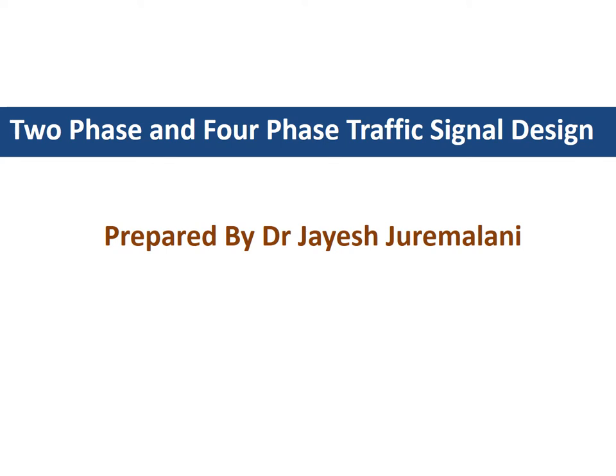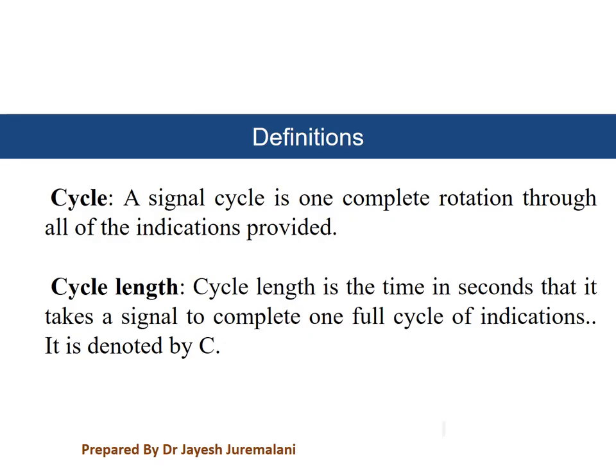So let's get started. Let us first recall some basic definitions and terminology related to signal design. Design means we need to calculate the green timing and red timing for the signals. A cycle is the complete rotation through all the indicators provided — green, yellow, and red. The time required to complete one cycle is known as the cycle length, denoted by C.